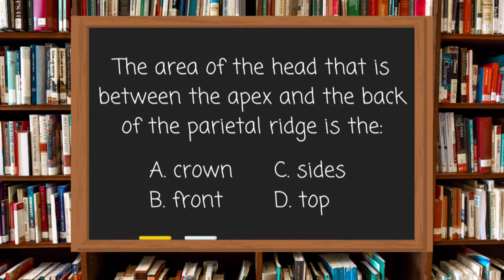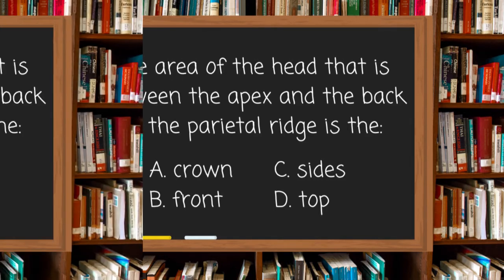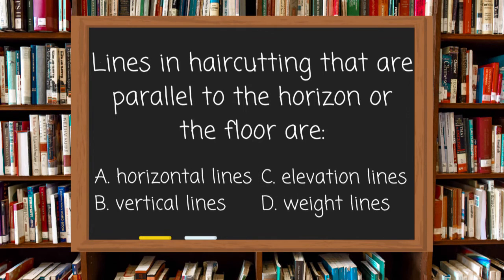The area of the head that is between the apex and the back of the parietal ridge is the: A. Crown, B. Front, C. Sides, or D. Top. The answer is A, crown.